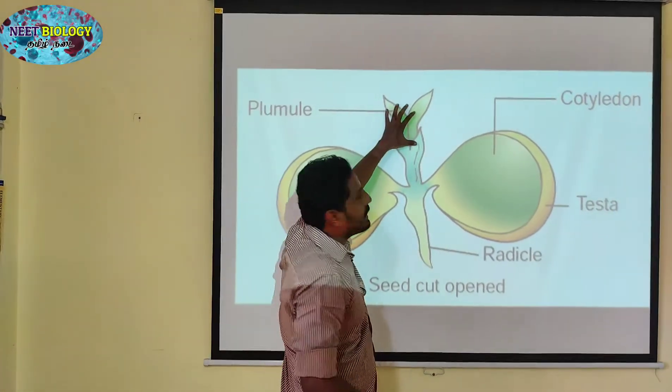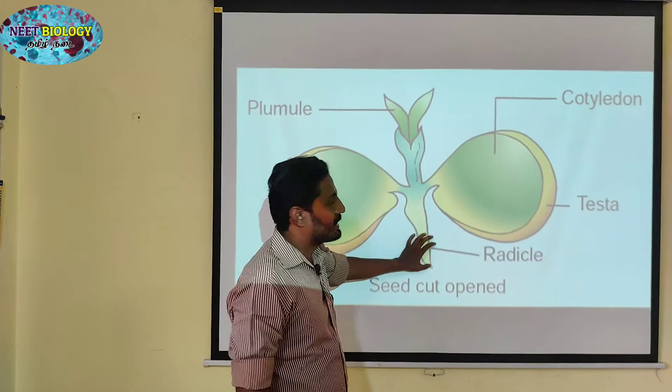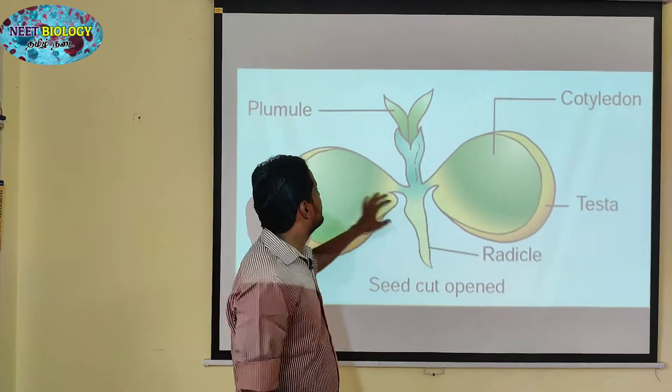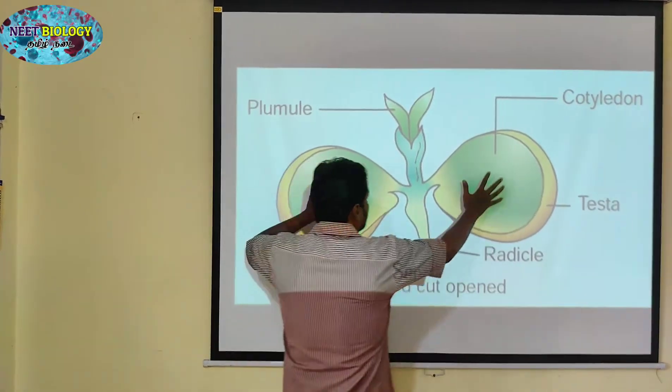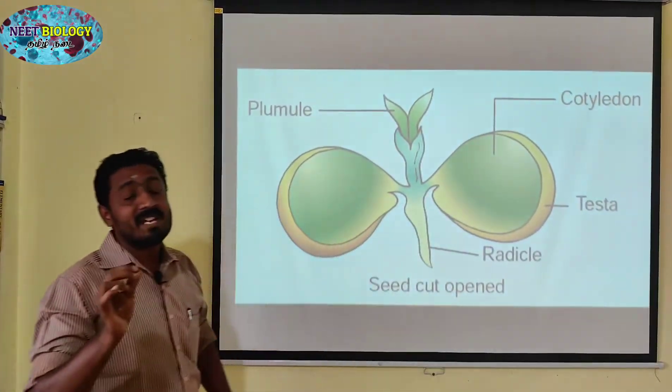Plumule, radicle, radical. Cotyledon — vitellical. This is the embryonic axis.